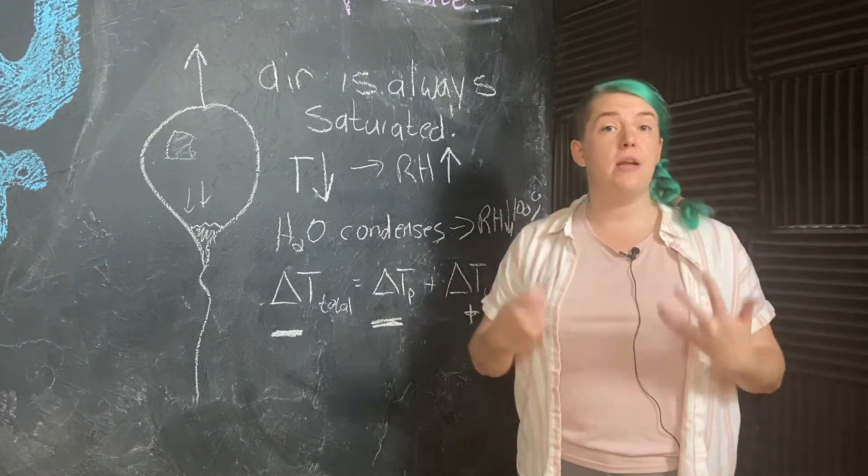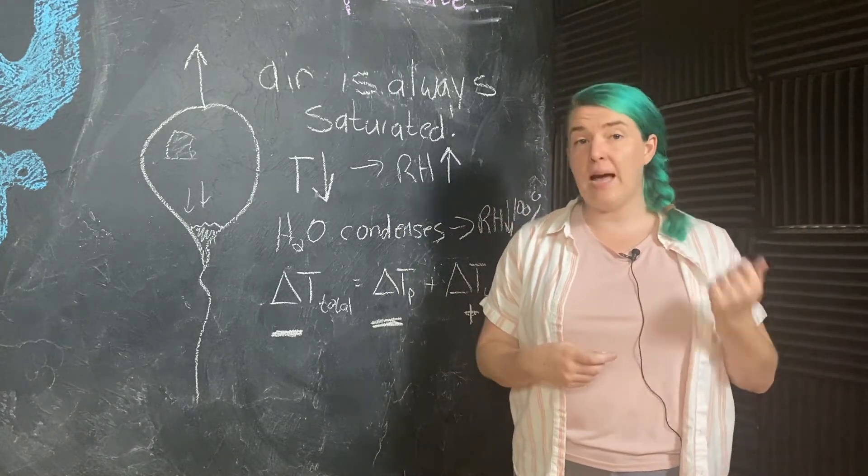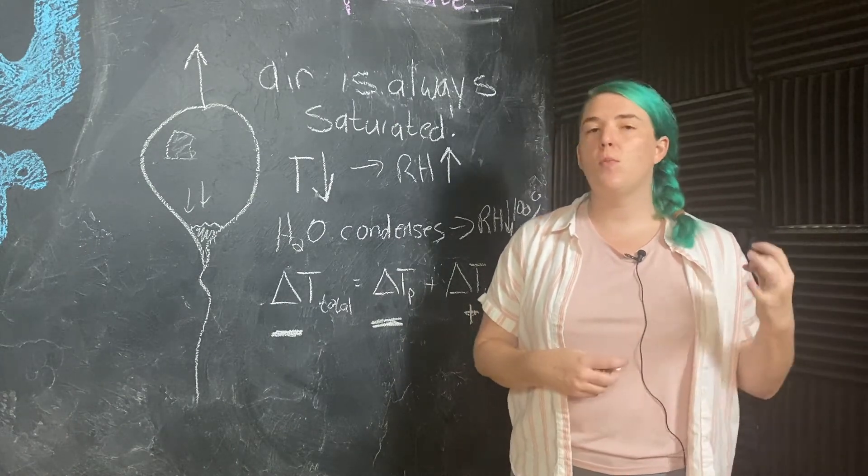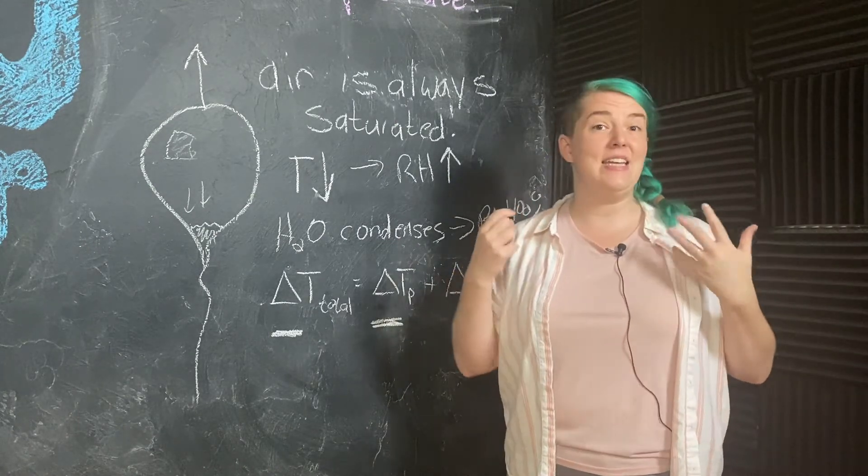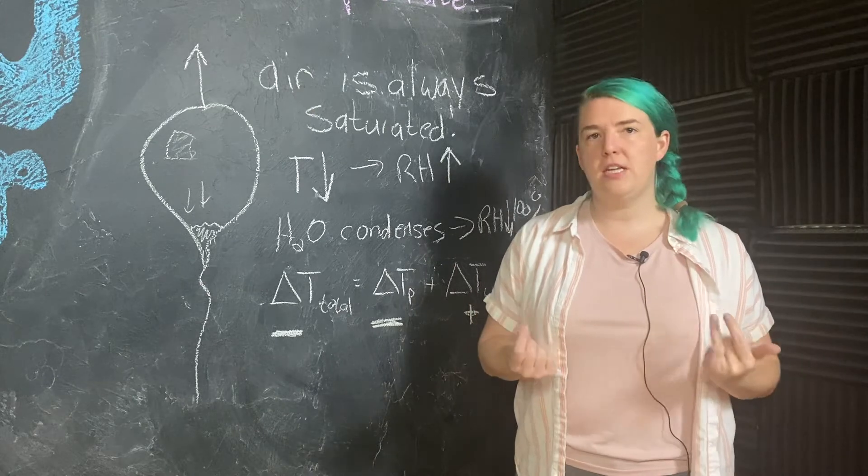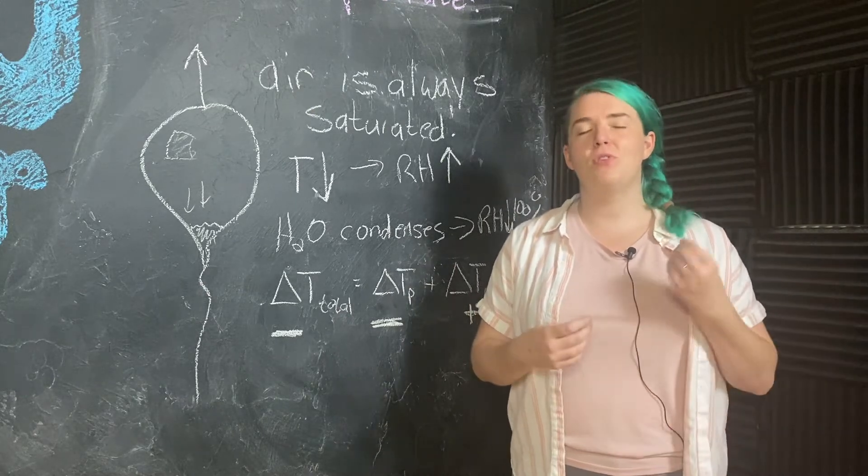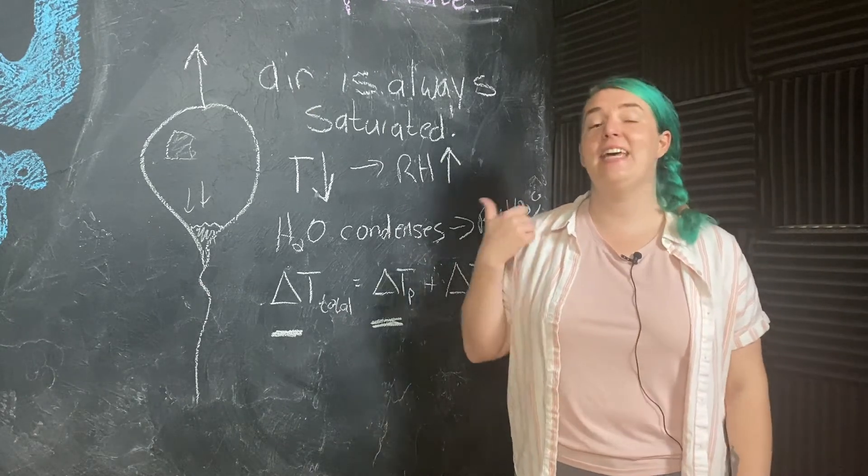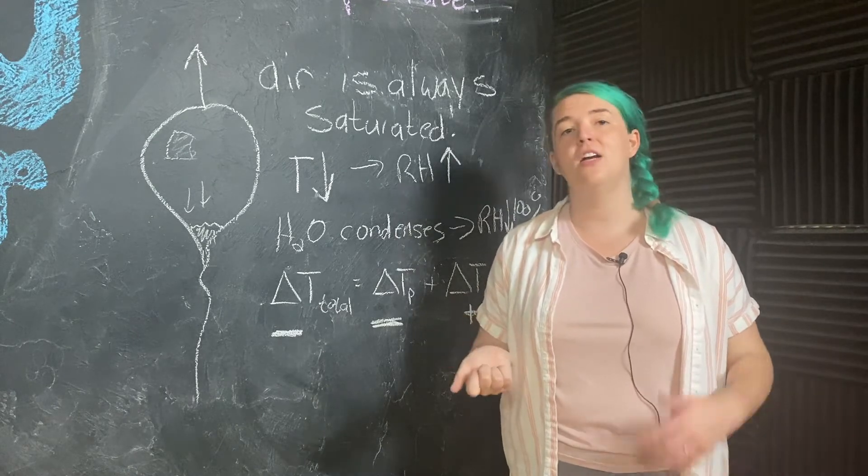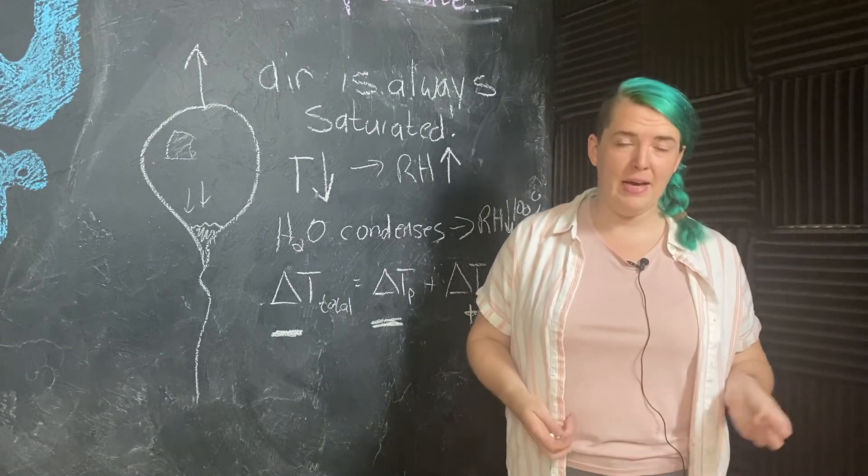So a good number for moist adiabatic lapse rate is going to be somewhere between 5 and 9 degrees Celsius per kilometer. So not quite as fast as that 10 degrees Celsius per kilometer we found for dry adiabatic lapse rate.